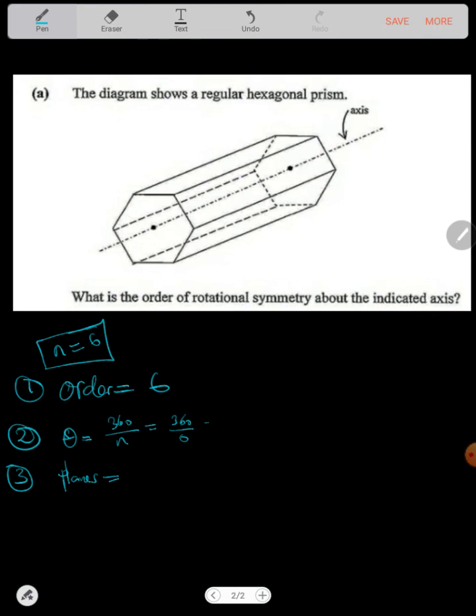But the angle, the angle will be 360 degrees divided by the number of sides, which is 360 divided by 6 to give us 60 degrees. And the planes would be the number of sides plus 1, which is 6 plus 1, that would give us 7 planes of symmetry.